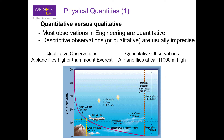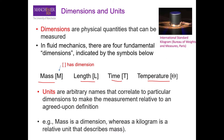For a physical quantity to be quantitative, it needs to have a magnitude and a unit. In engineering, these physical quantities are known as dimensions. In fluid mechanics we have four primary dimensions: mass [M], length [L], time [T], and temperature [Θ]. We attach a unit to each of these dimensions.